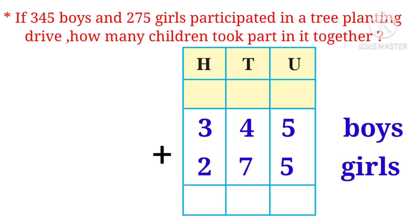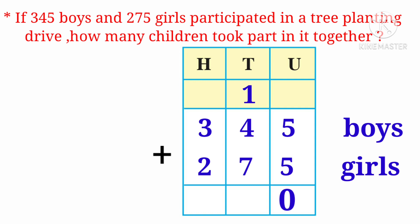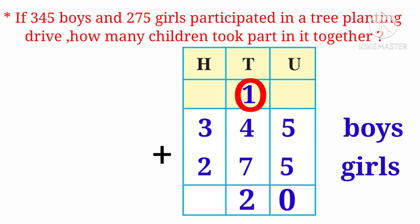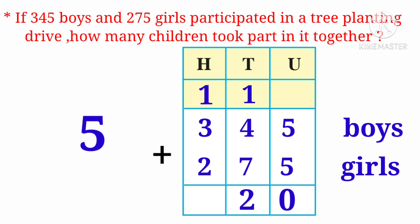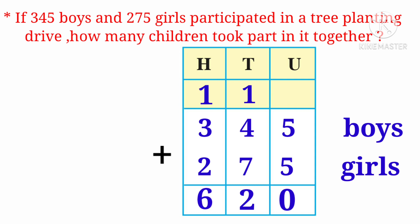5 plus 5 is equal to 10. I write 0 in the units column of the sum and carry over 1 above 4 in the tens column. 4 tens plus 7 tens is equal to 11, plus the carry-over 1 is equal to 12. I write 2 in the tens column of the sum. Moving to the hundreds: 3 plus 2 is equal to 5, plus carry-over 1 is equal to 6. So the answer we get is 620.